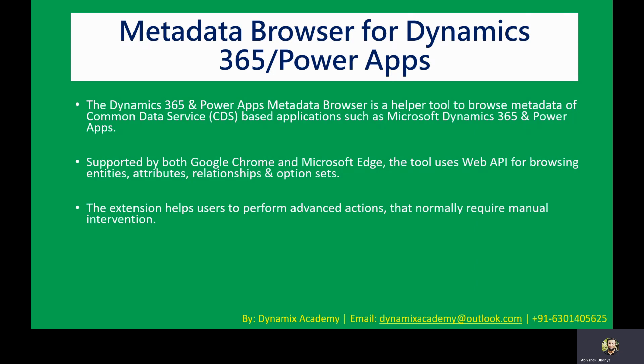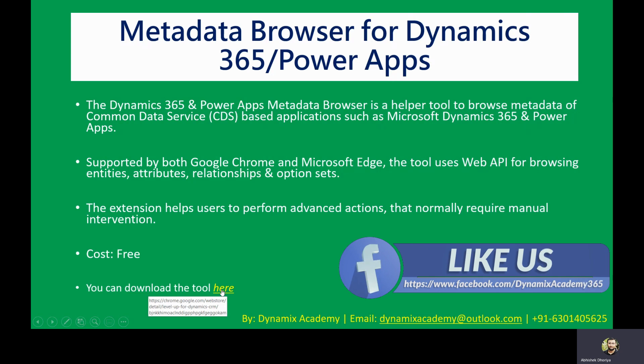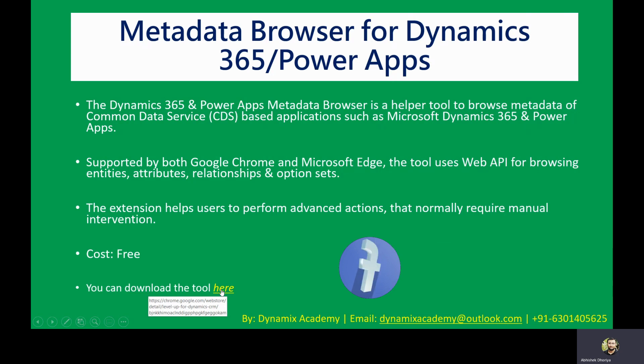This extension helps users perform advanced actions that normally require manual interventions. For example, to get attribute metadata you might need to write some logic or use other means to retrieve it in day-to-day development activities, but with this tool you can do it very easily. It is available free of cost, and you can download it from the link in the description. It is essentially a Google Chrome extension or Microsoft Edge add-on.